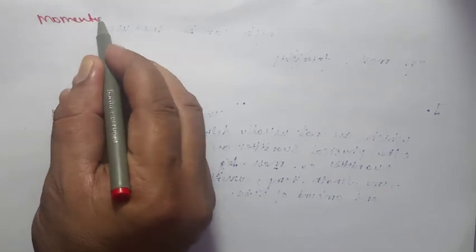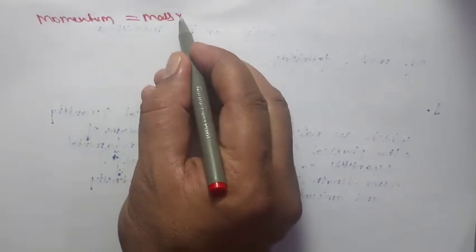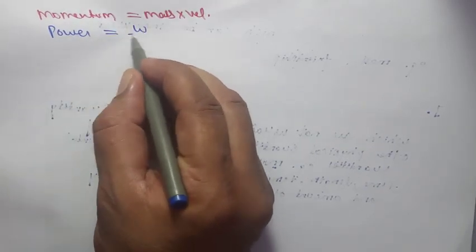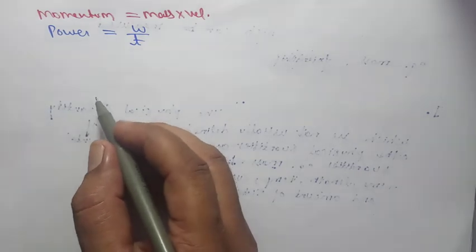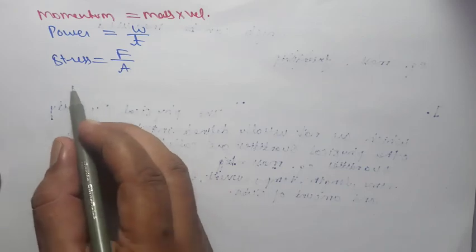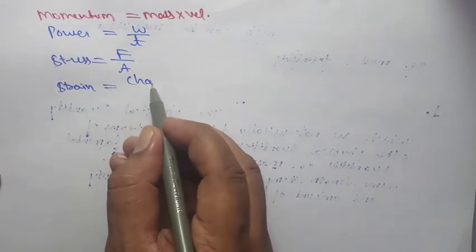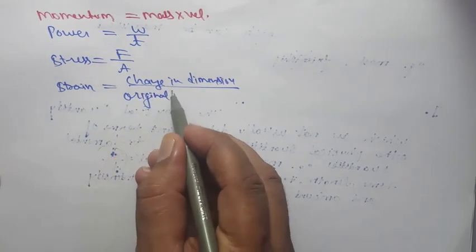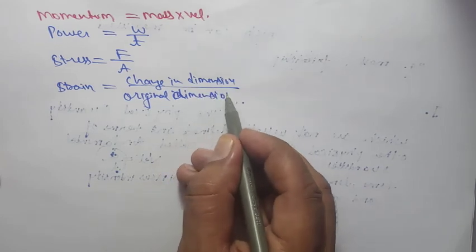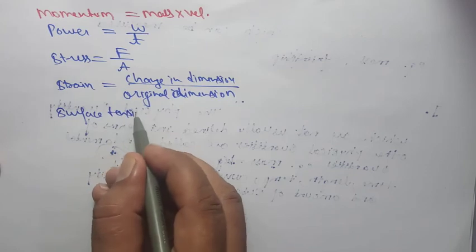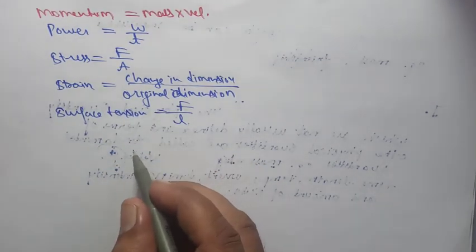Homework formulas: (1) Momentum = mass × velocity. (2) Power = work / time. (3) Stress = force / area. (4) Strain = change in dimension / original dimension. (5) Surface tension = force per unit length.